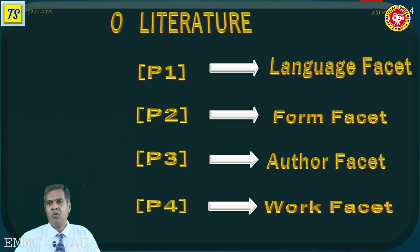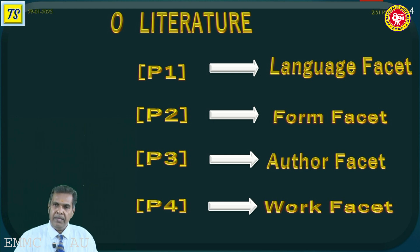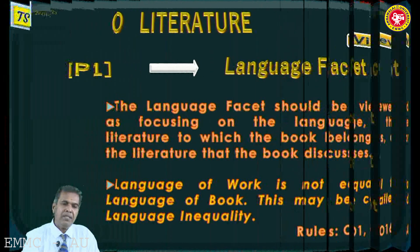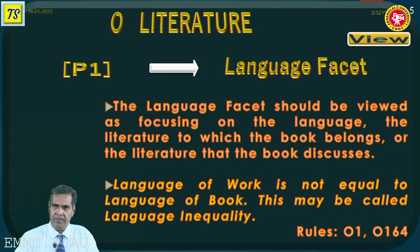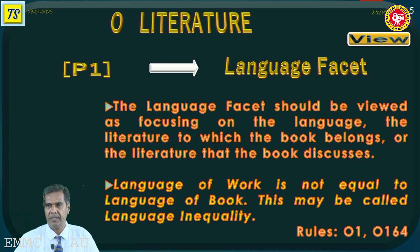When you classify documents related to literature, these four levels need to be identified. The class number should be constructed with all four levels — you cannot ignore any one of the levels, particularly for literature-related subjects. The first facet is the language facet. Let me recollect the concept of the language facet. The language facet should be viewed as focusing on the language of the literature to which the book belongs or that the book discusses.